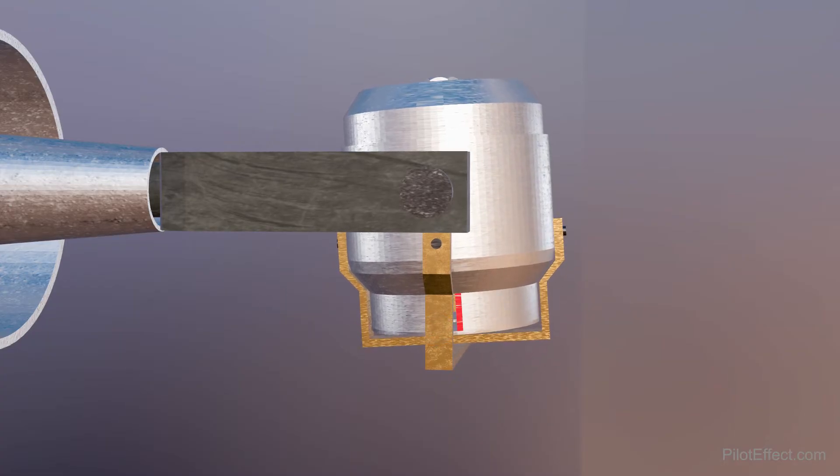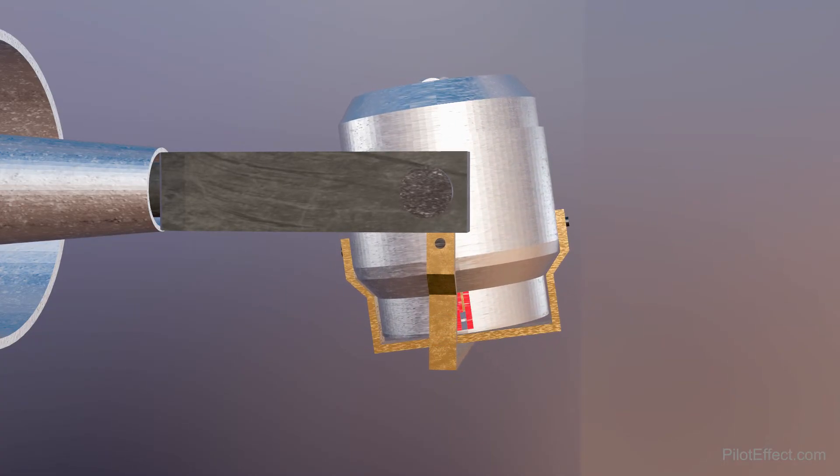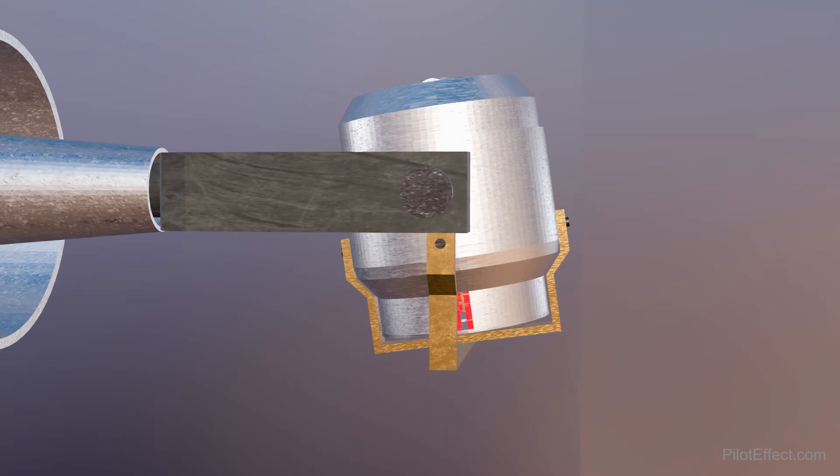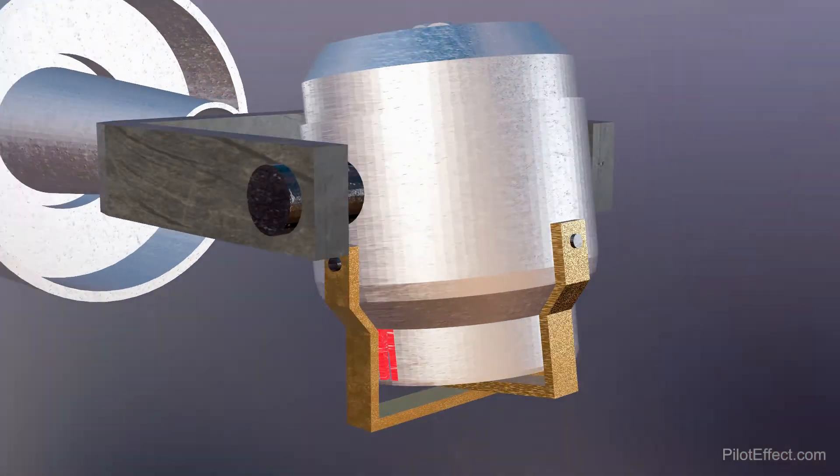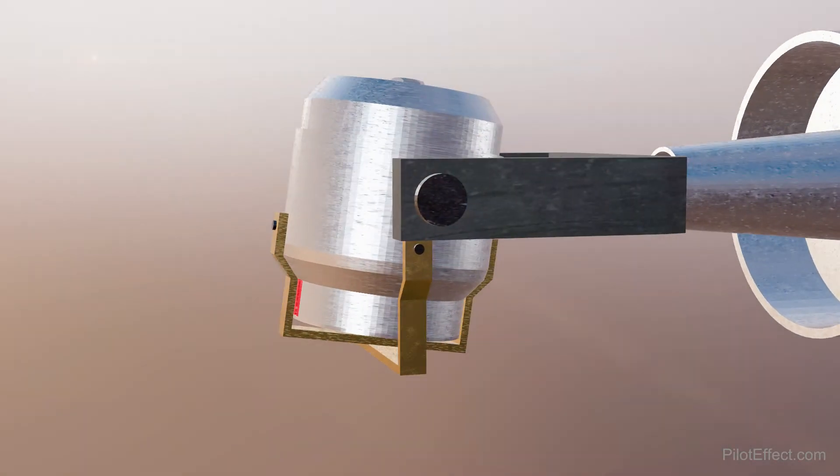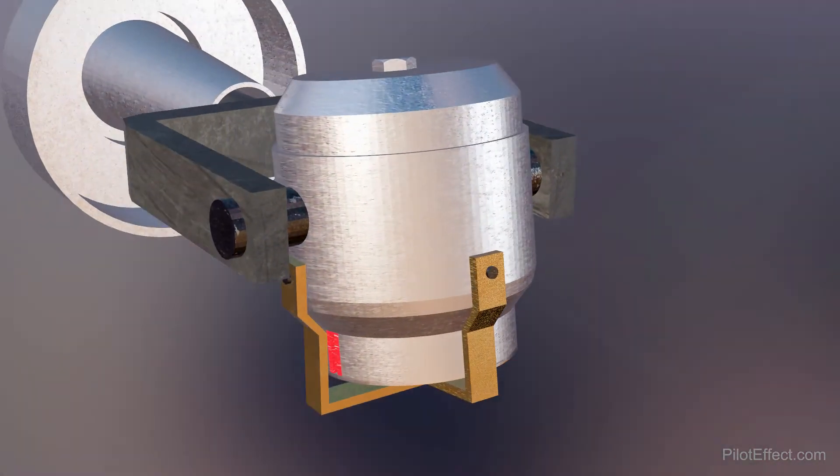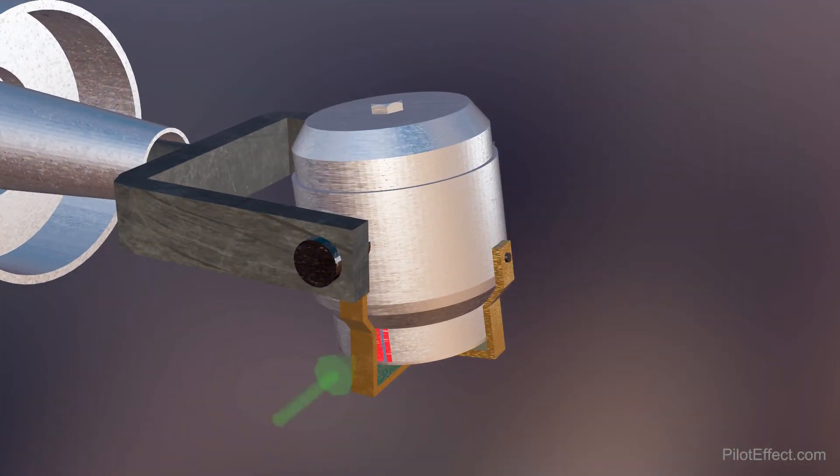Now let's say for some reason the gyro tilts. You can see that the vein due to gravity stays orientated down. Now this results in one port being more opened and the opposite port to be more closed. So now we have more airflow here, essentially creating a force like so.